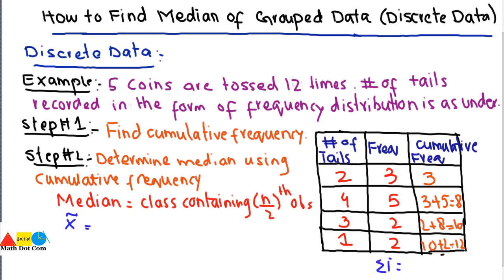The total number of observations are 12, so I have to write: class containing n is 12, so 12 by 2 observation. X tilde equals class containing 12 by 2, which is 6.